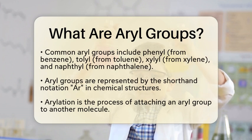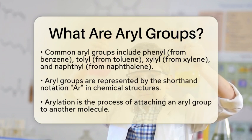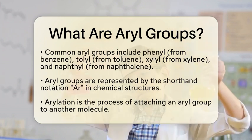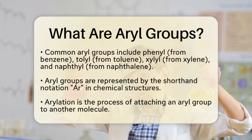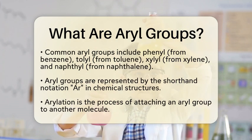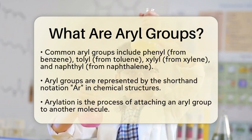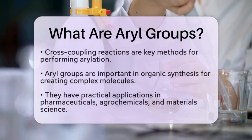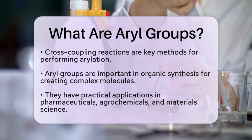In chemical structures, aryl groups are often represented by the shorthand notation Ar. However, be careful not to confuse this with the symbol for the element argon.